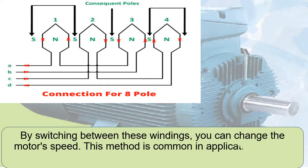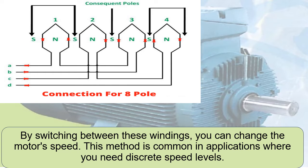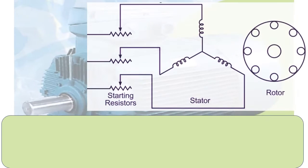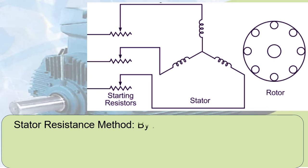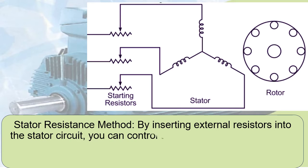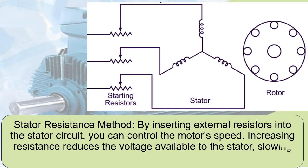Stator Resistance Method: By inserting external resistors into the stator circuit, you can control the motor's speed. Increasing resistance reduces the voltage available to the stator, slowing down the motor.